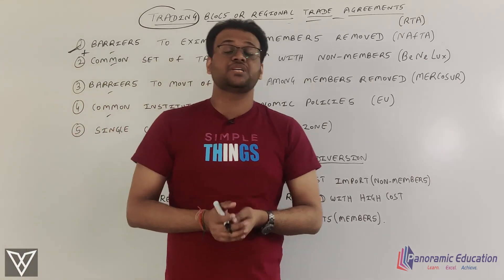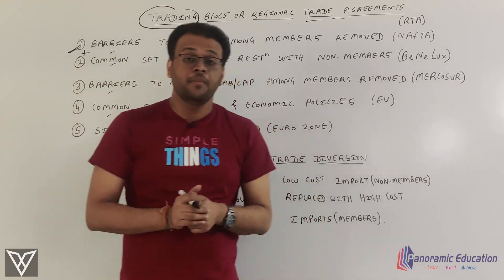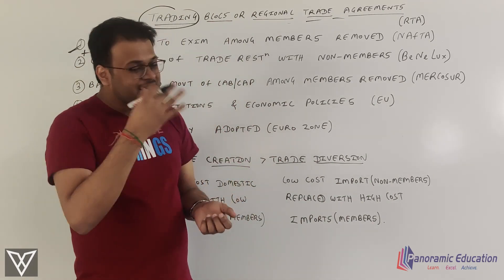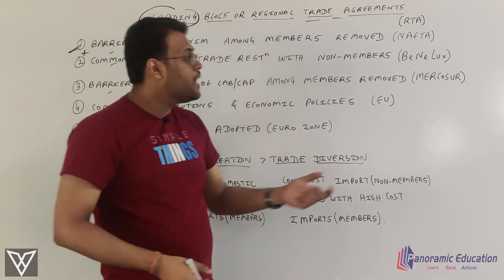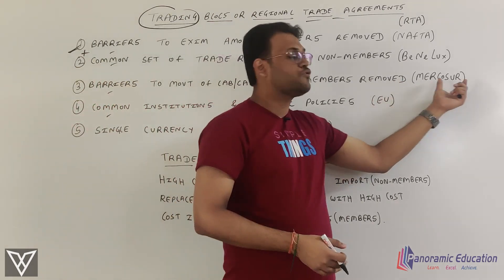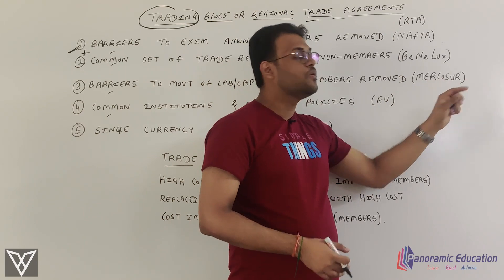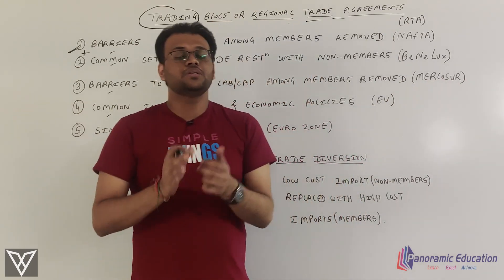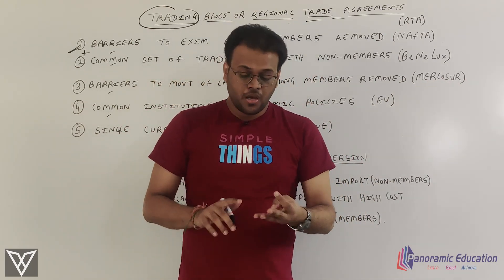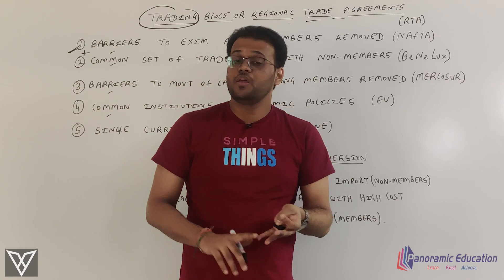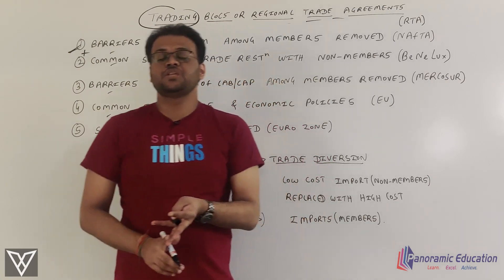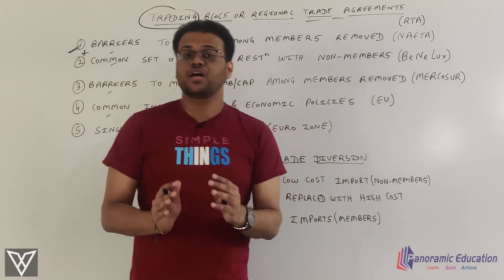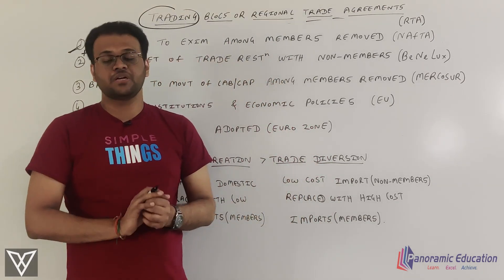The advanced level is called a common market. One example is Mercosur, which was entered into by four countries: Brazil, Argentina, Paraguay, and Uruguay.